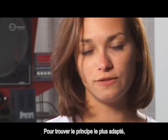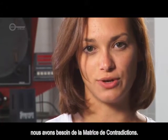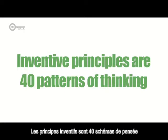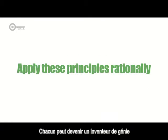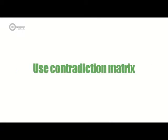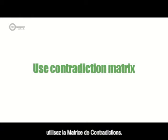In order to find the best principle, we need to look into the contradiction matrix. Inventive principles are 40 patterns of thinking which inventive minds can engage with to get win-win solutions for any challenge. Now anyone can become a genius inventor by applying these principles rationally. To find the inventive principle which works best for you, use the contradiction matrix.